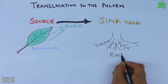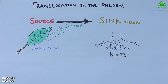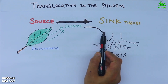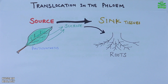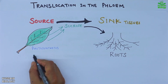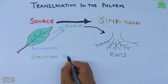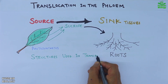This translocation is necessary to help plants in many ways. It is essential for growth and development, supports non-photosynthetic tissues like roots, flowers, fruits, and buds, and works alongside xylem which transports water. Now let's see the structures used in this transport.